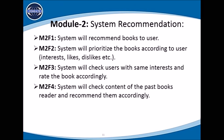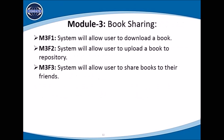System Recommendation Module: In this module, the system will recommend books to users. The system will prioritize books based on users' likes, dislikes, and interests. The system will show rated books to users based on demographic information of other users, and will also recommend books based on the content of the user's past book reading history. Book Sharing Module: The system will provide users with the facility to download books. Users can upload books to the system and share books with their friends.